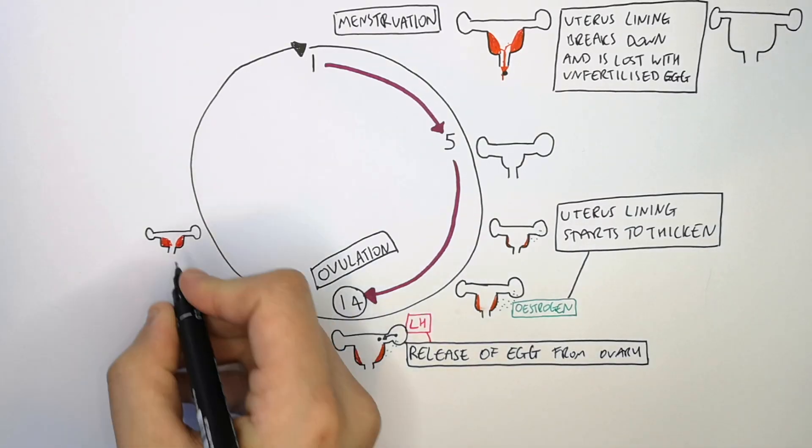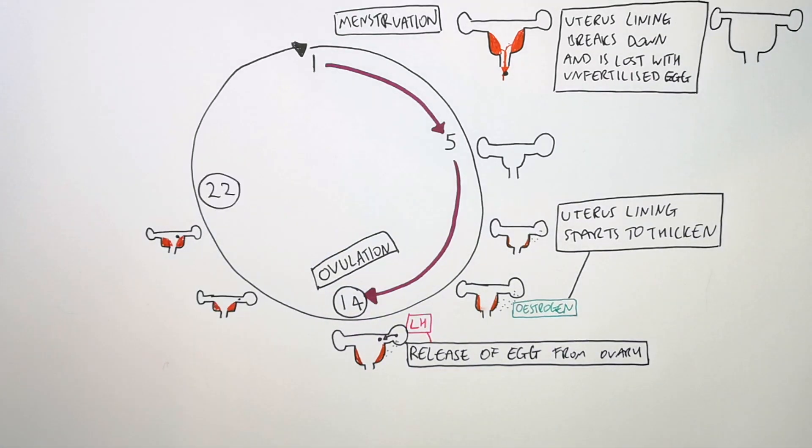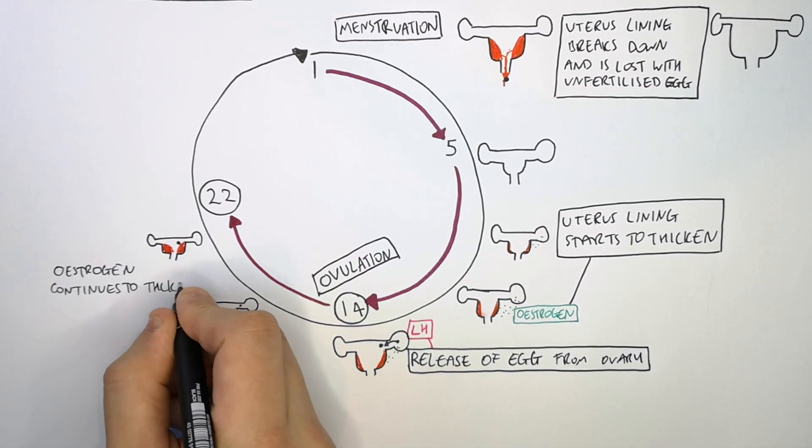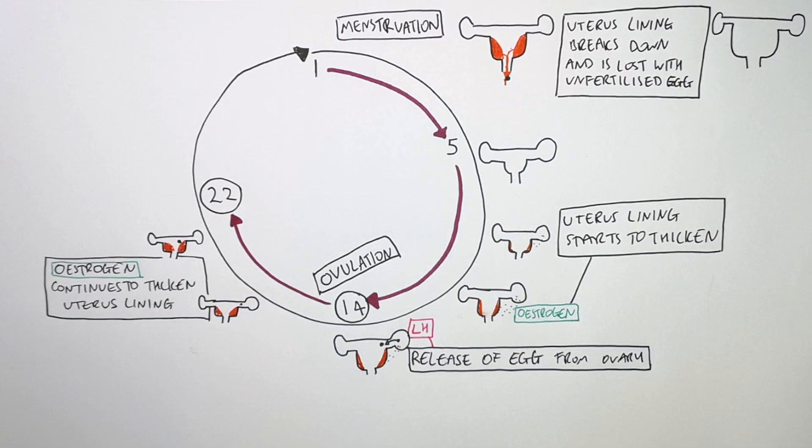After the release of an egg during ovulation, the uterus lining gets a little bit thicker and that is oestrogen that causes that. So oestrogen continues to thicken the uterus lining between days 14 and 22.